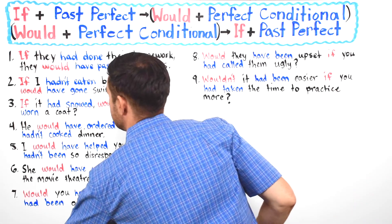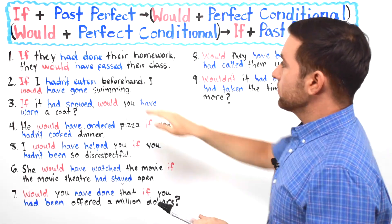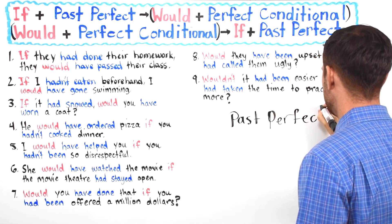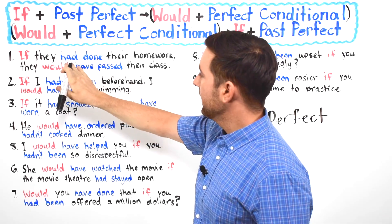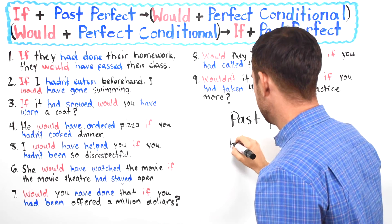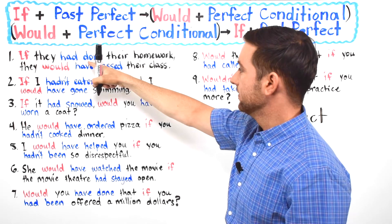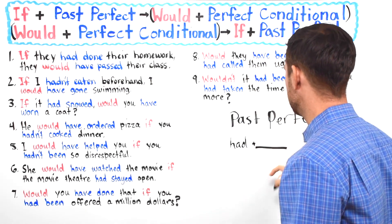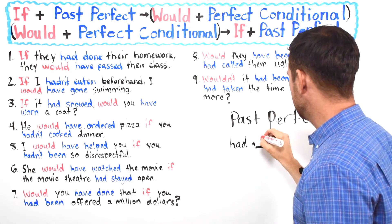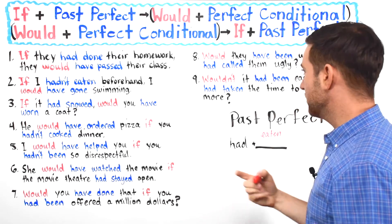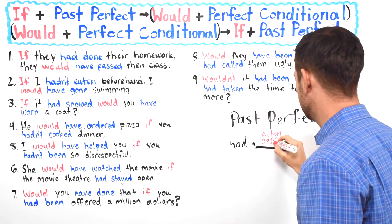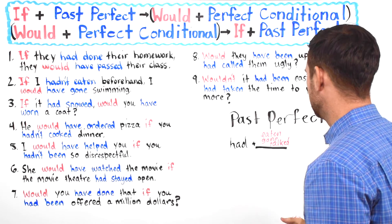So what is the perfect conditional? First, let's talk about the past perfect. When you have the past perfect, it's like 'had done' — 'had' comes from the verb 'to have.' So you start off with 'had,' and then you put the past participle form of a verb. For example, the verb 'to eat' — the past participle would be 'eaten.' Or 'to go' — it would be 'gone.' Or 'talk' — it would be 'talked.' So that's the past perfect.